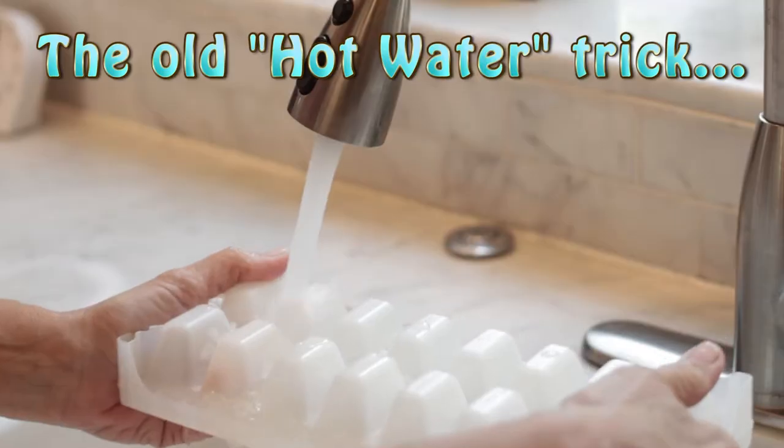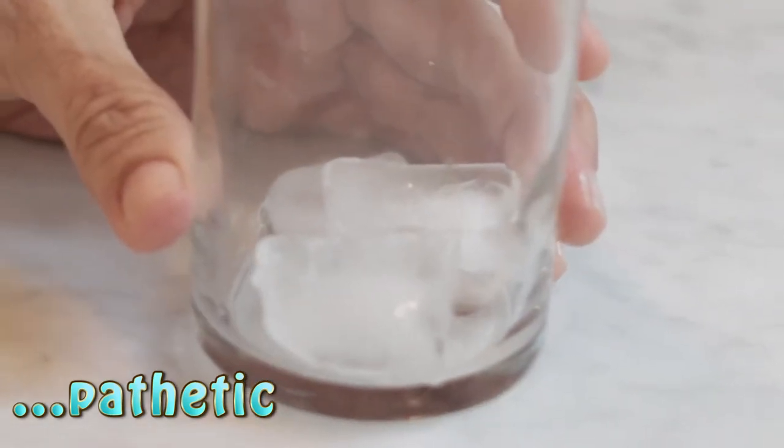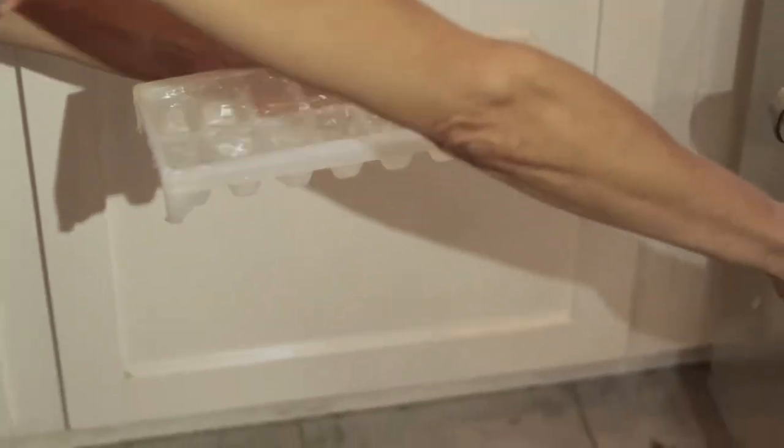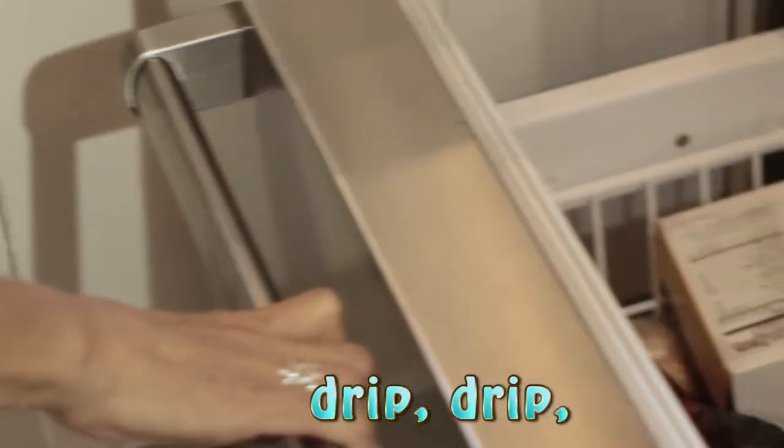I'm finally able to retrieve a couple of cubes by running hot water over the bottom of the tray, but look how small they are so they melt too fast. Then when I refilled the tray the water spills on the floor or in the freezer. This shouldn't be so hard.